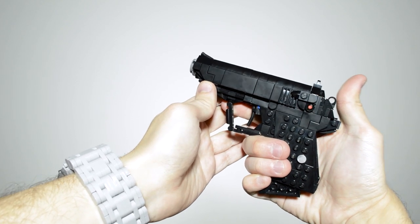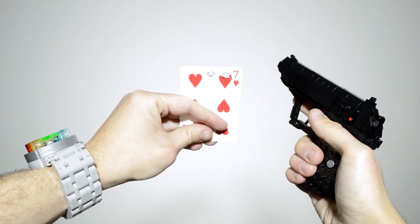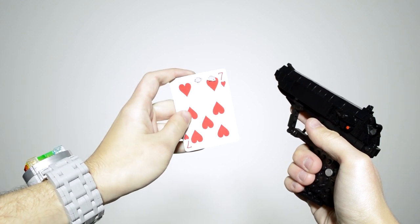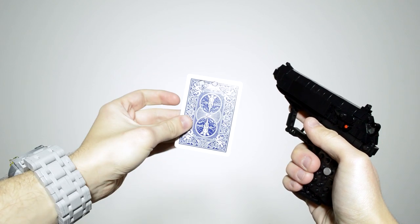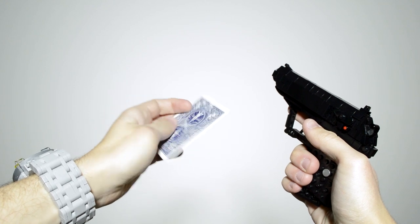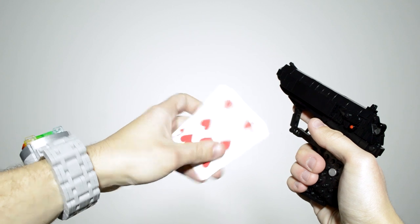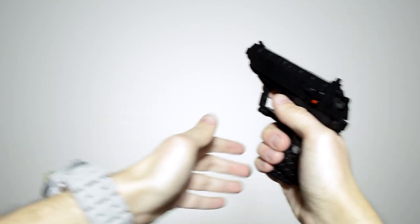One of the earliest LEGO replica weapons I made was the Wolfram PP7, probably back in 2005, 2006. While Halo got my start with posting my LEGO replicas online, it was the 007 games that got me started overall.